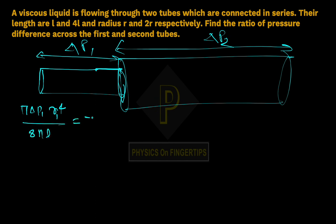For the second tube: π times ΔP₂ times R₂ to the power 4 upon 8ηL. So for the pressure difference: ΔP₁R to the power 4 upon L